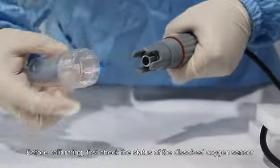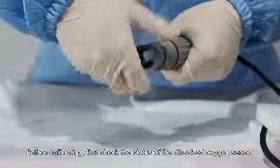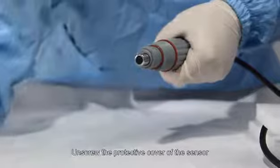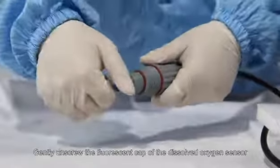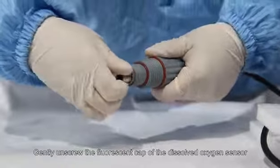Before calibrating, first check the status of the dissolved oxygen sensor. Unscrew the protective cover of the sensor. Gently unscrew the fluorescent cap of the dissolved oxygen sensor.